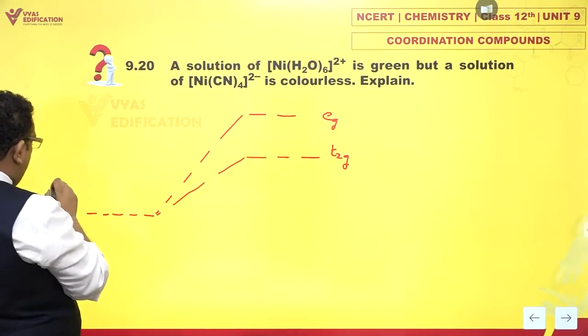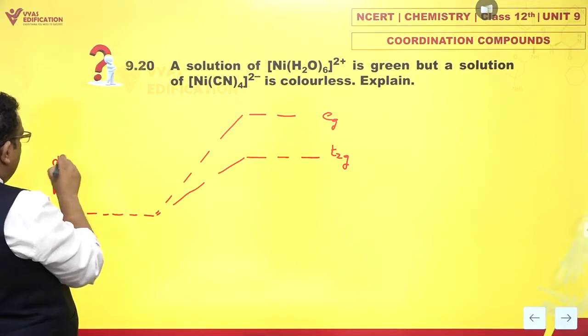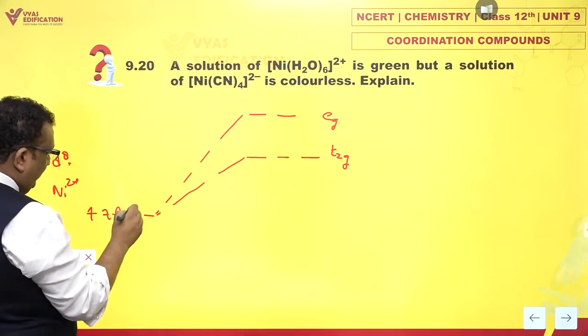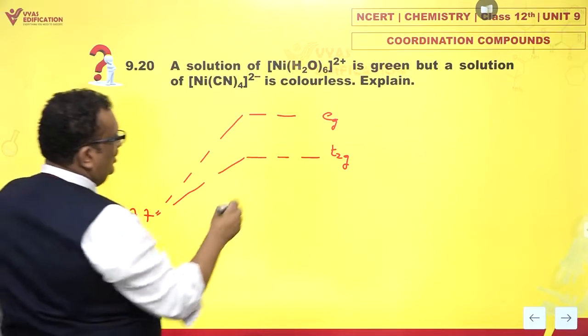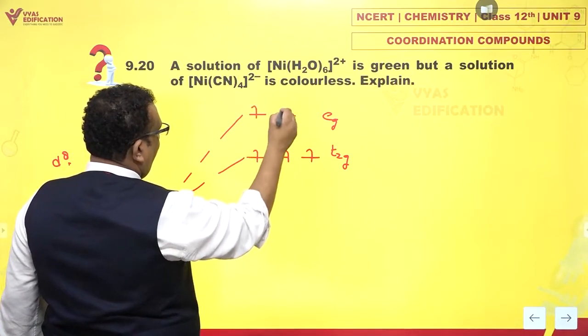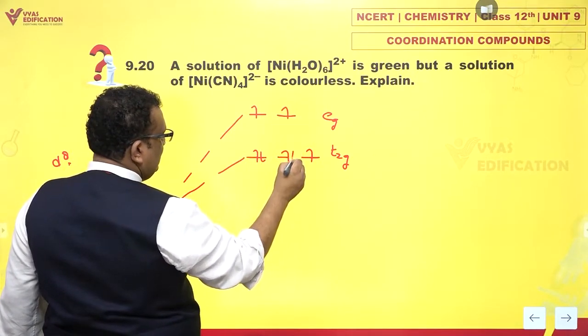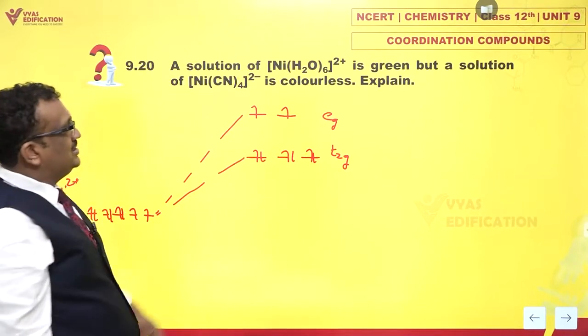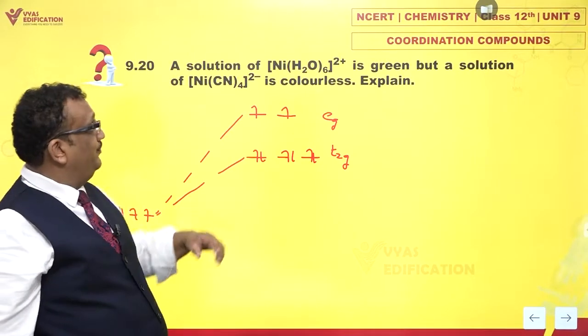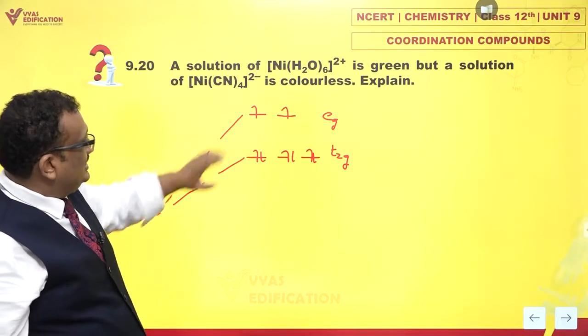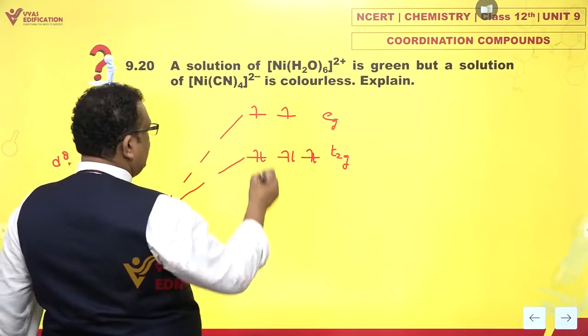Now you have Ni2+, which is a d8 complex. So filling 1 through 8 electrons in the split d orbitals. This is a d8 complex, the aqua complex of nickel. Since delta O is small...